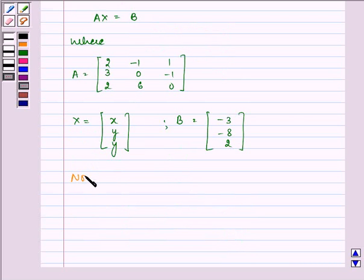Now, let us first find the value of determinant A. It equals 2 bracket 0 plus 6, plus 1 bracket 0 plus 2, plus 1 bracket 18 minus 0. That equals 32, which means it is not equal to 0.